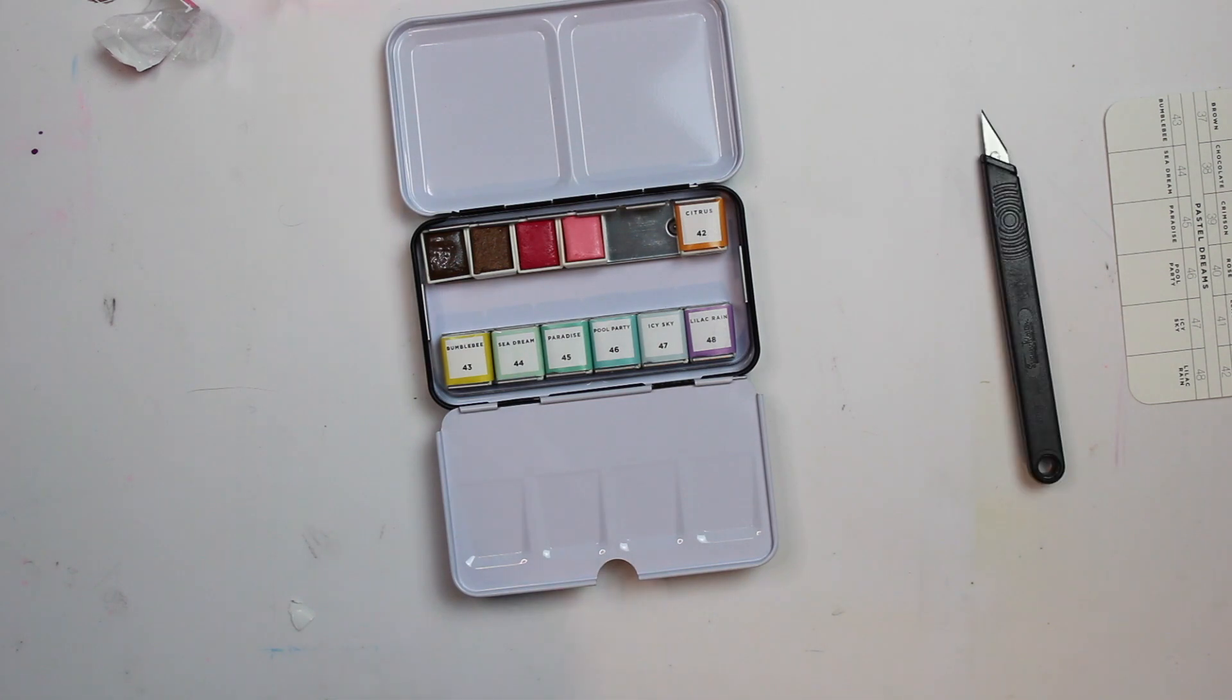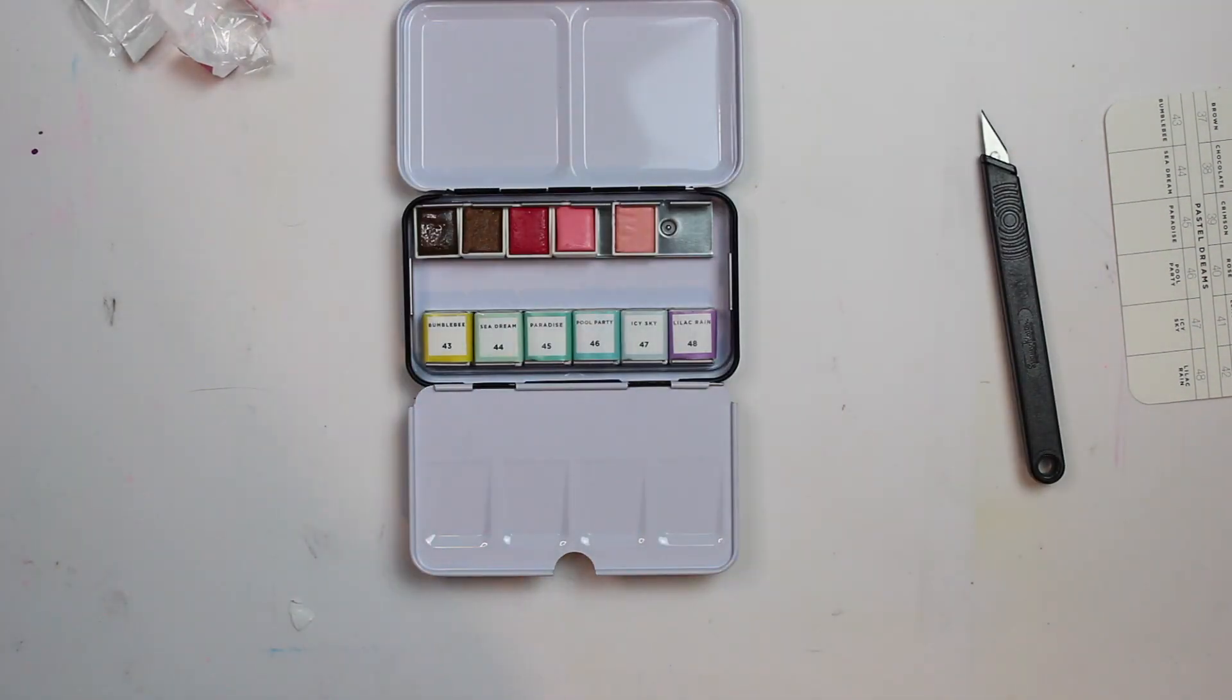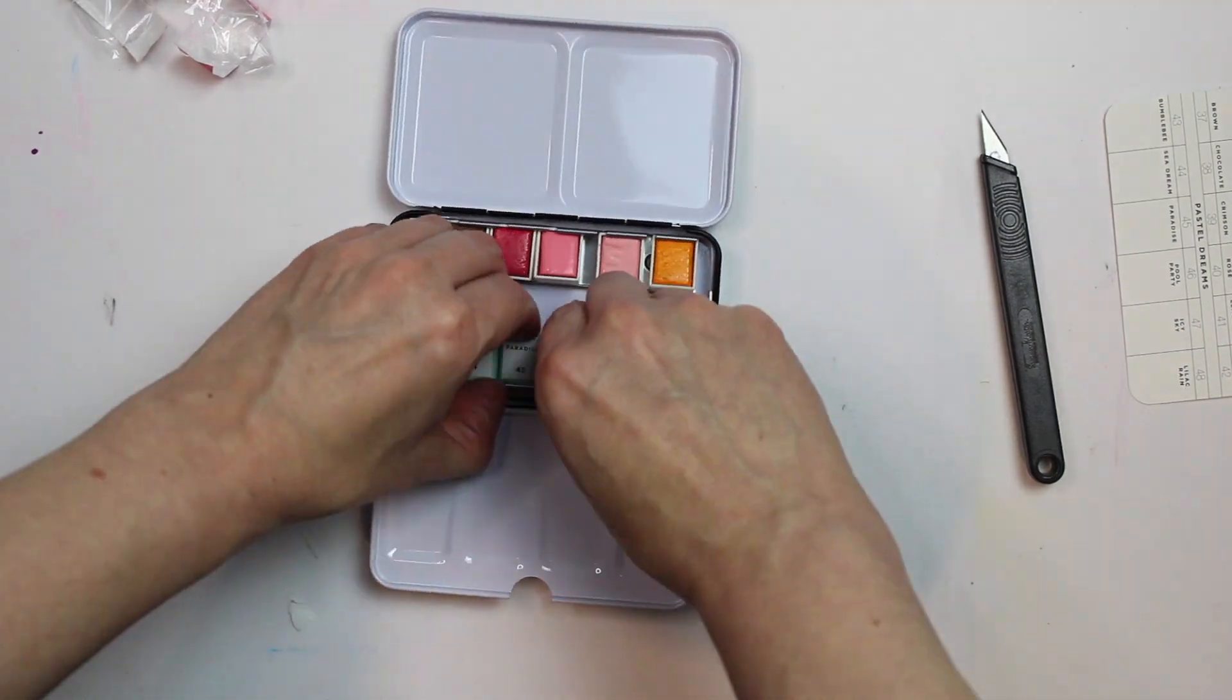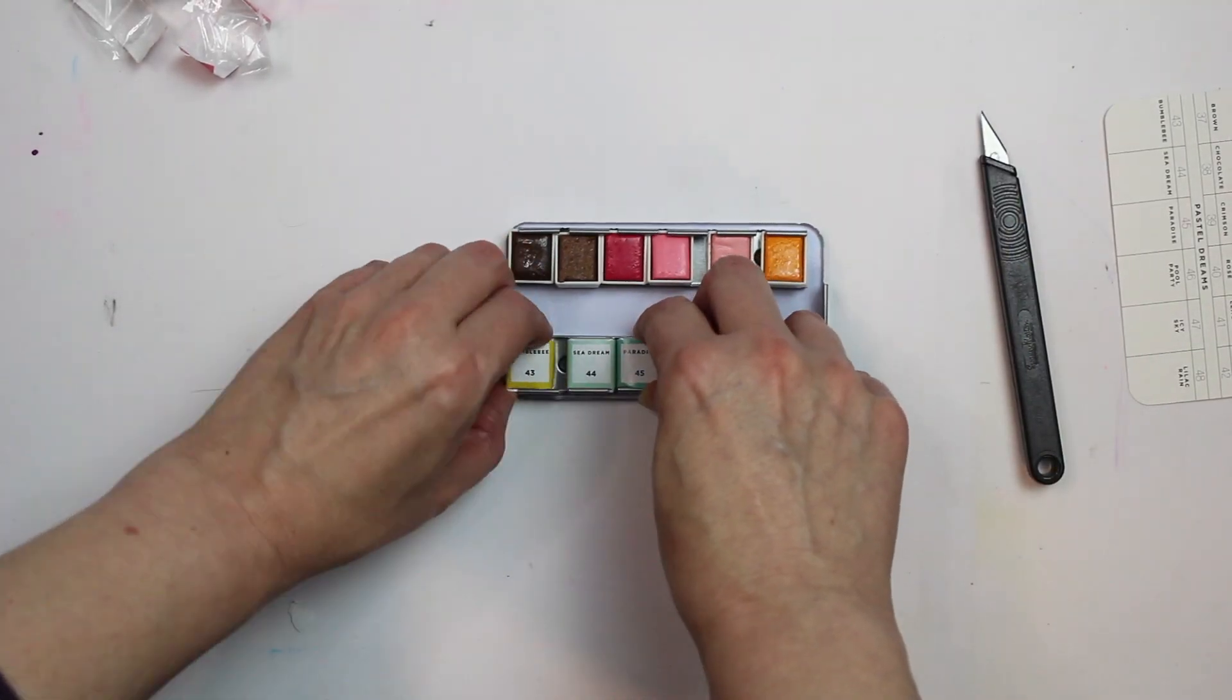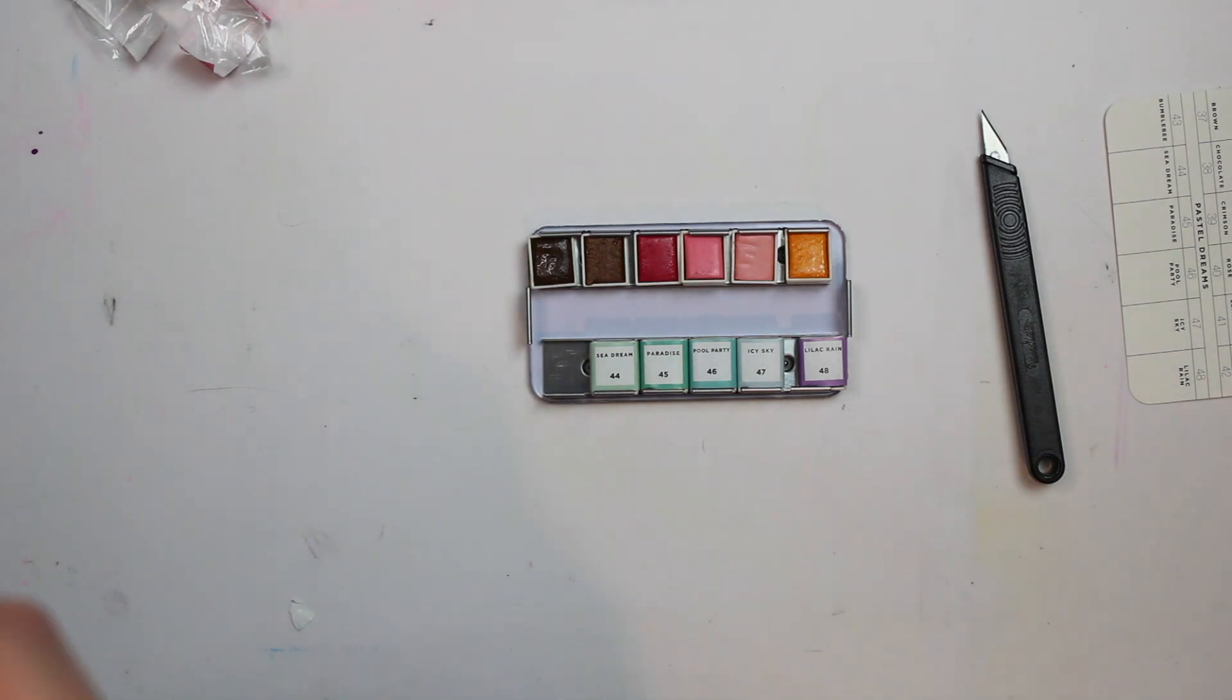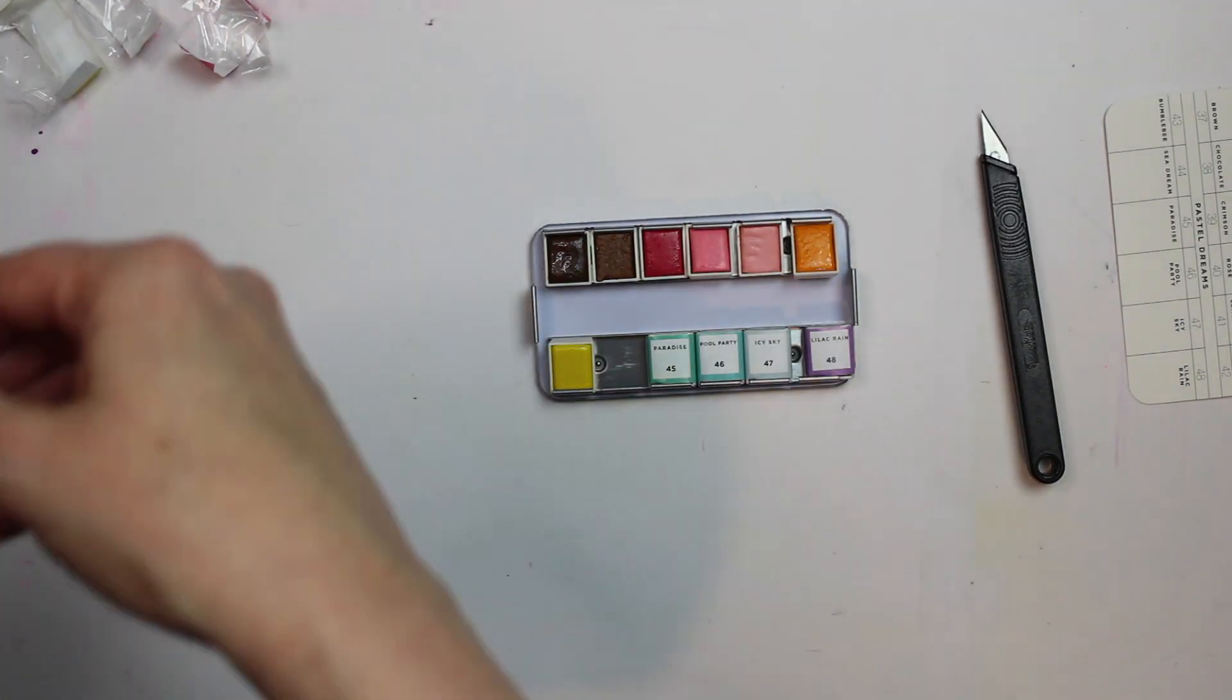Unfortunately they have printed the number of each pan on the side, which for me wasn't a good idea. They should have printed them on the front because that makes it easier for ordering when you run out.